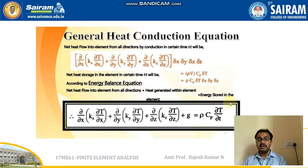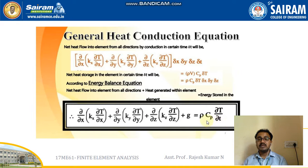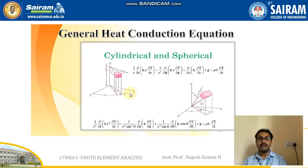The final general heat conduction equation can be written as: ∂/∂x(Kx·∂T/∂x) + ∂/∂y(Ky·∂T/∂y) + ∂/∂z(Kz·∂T/∂z) + G = ρ·Cp·∂T/∂t. Here, capital T indicates temperature, small t indicates time, Cp is specific heat, and ρ is density.